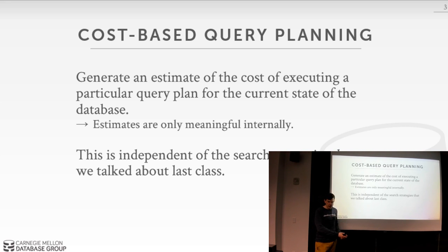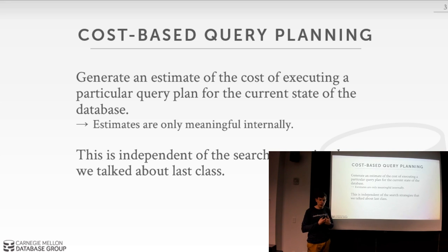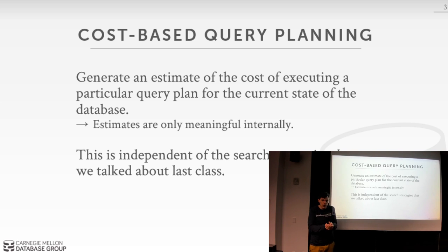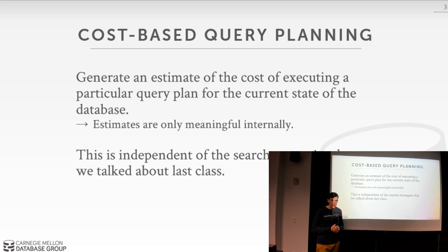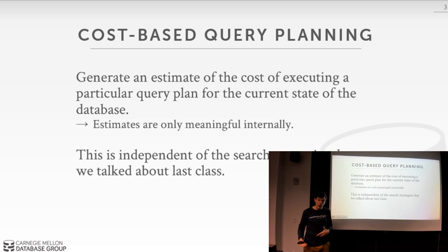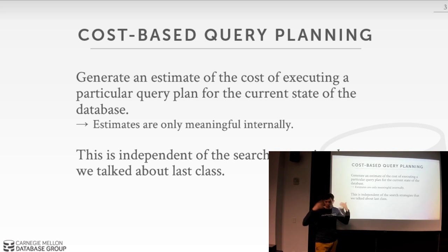Today's lecture is about cost-based query planning. In the very first systems — Ingress and Oracle from the 1970s — optimization was based on static transformations or heuristics to generate an optimized query plan. For simple things like predicate pushdown or selecting the right index for a one-table query, heuristics are good enough. But for n-way joins, CTEs, window functions, and more advanced SQL, heuristics are not sufficient because it's very hard to come up with rules for really complex queries.